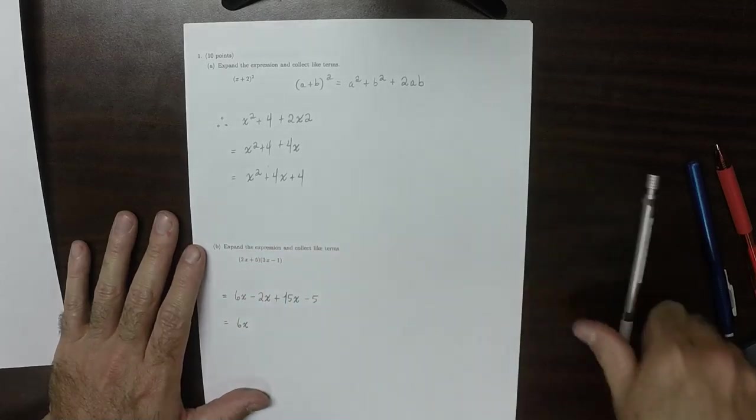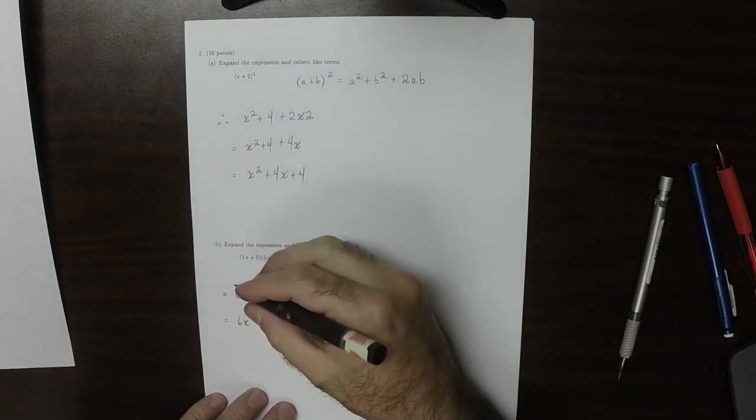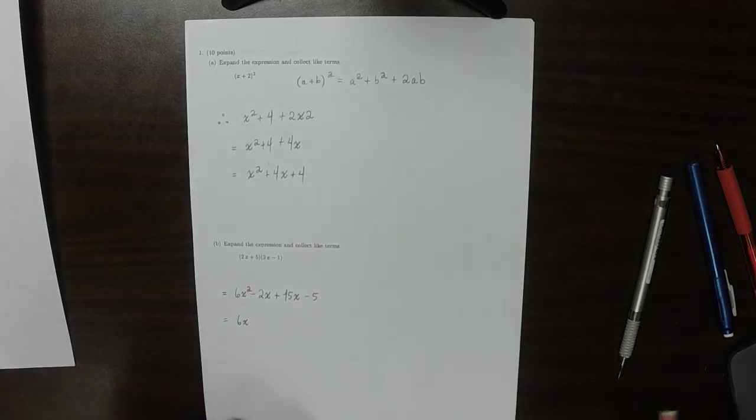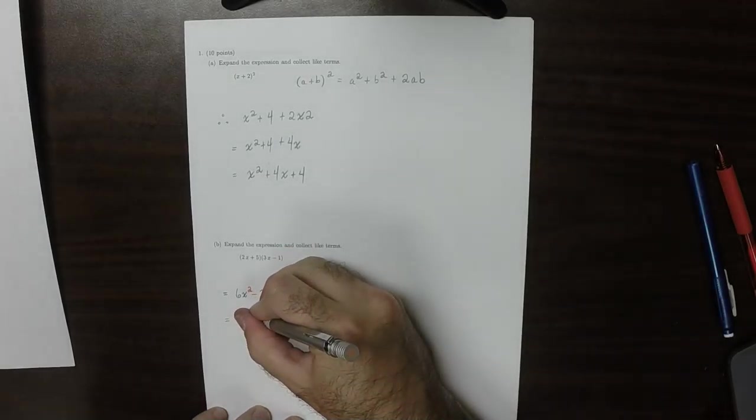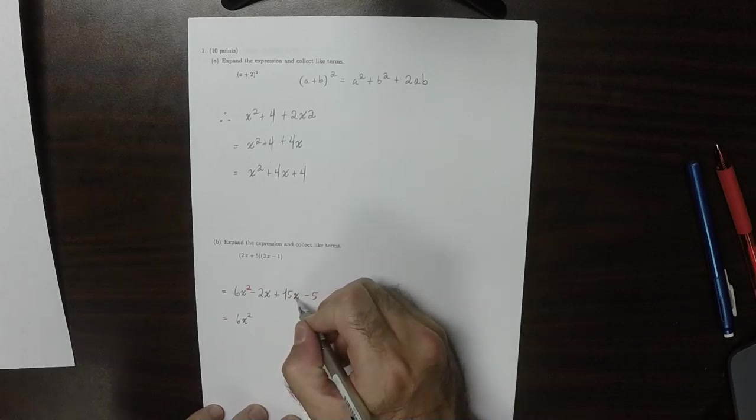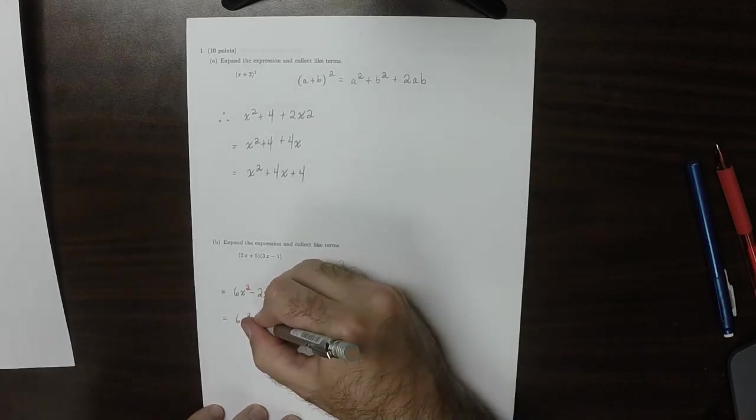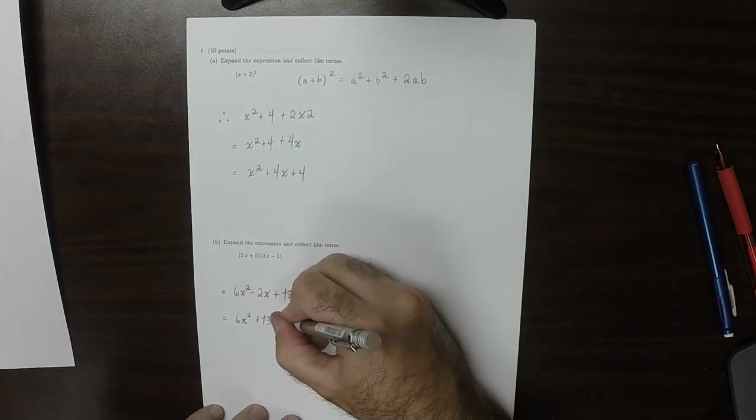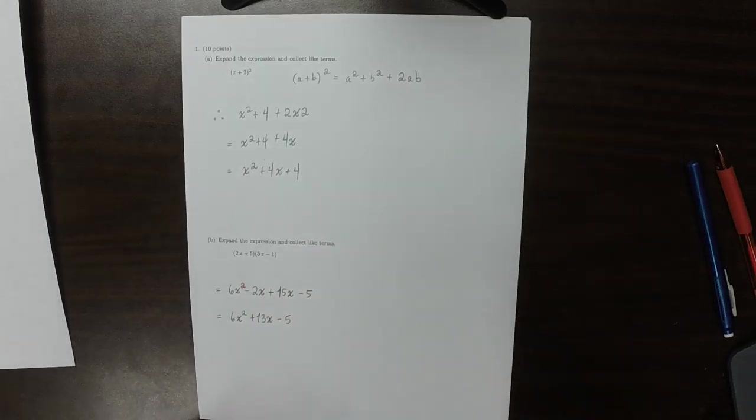So then that would be 6x—oops, that should be squared. So almost omitted that first round. So 6x squared, and then minus 2x plus 15x. That's 13x, and then minus 5 is the answer.